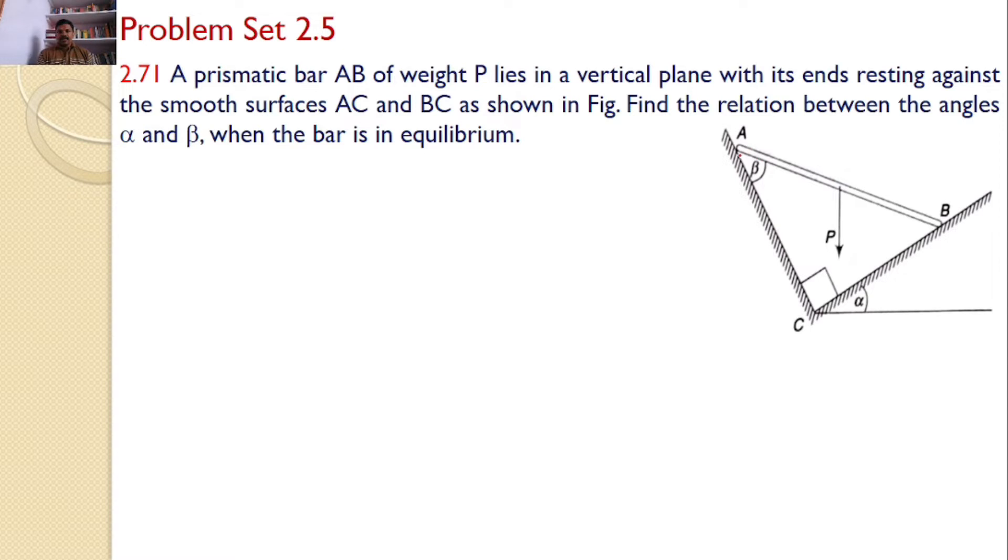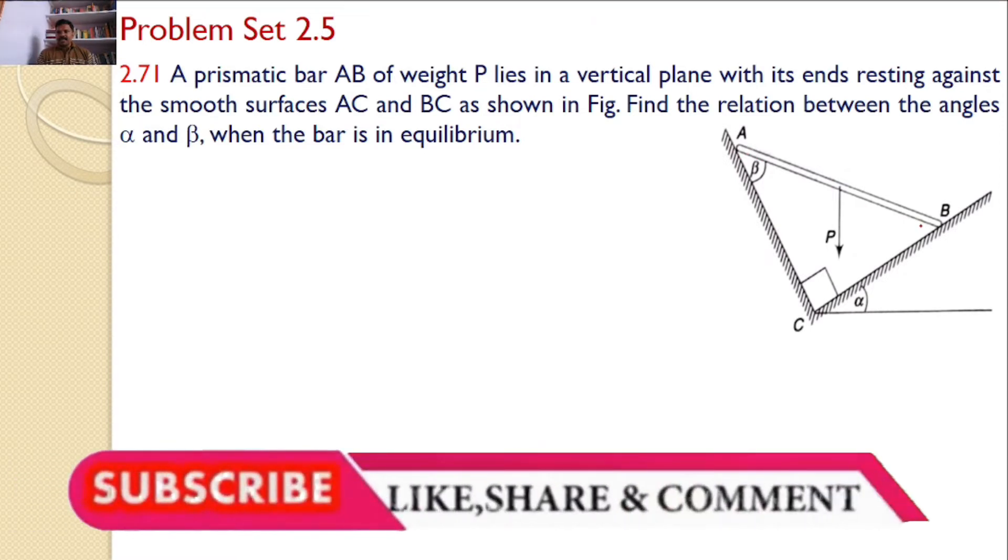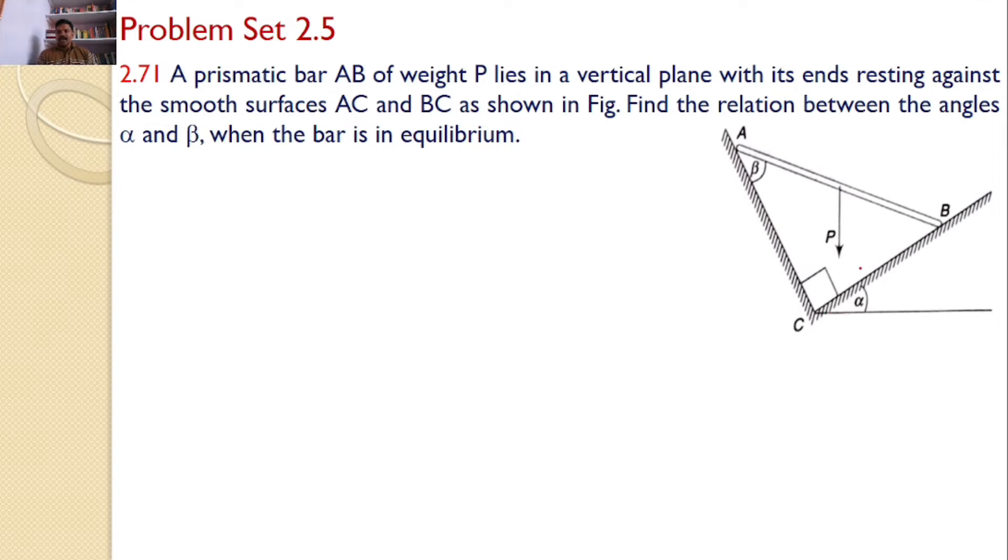That means the bar AB is resting against these two surfaces. Now our interest is to find the relation between the angles alpha and beta. For that, I am just redrawing the diagram. AC and BC are the two surfaces. The angle between these two is 90 degrees.